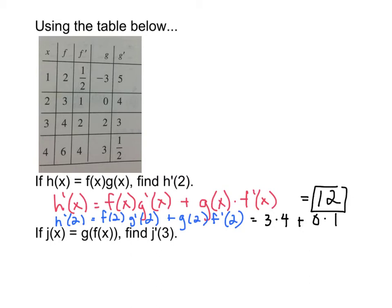The next one, if j of x is equal to g of f of x, find j prime of 3. Well, here we've got a composition, and we're putting f into g. Of course, to find the derivative, we're going to need to use chain rule.